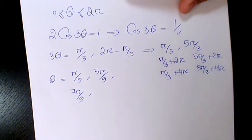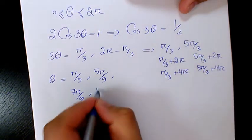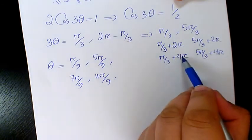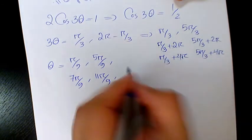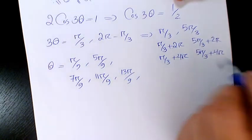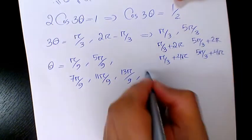Here we have 12 plus 1, 13π over 3, divided by 3 is going to be 13π over 9, and here we have 17π over 9.